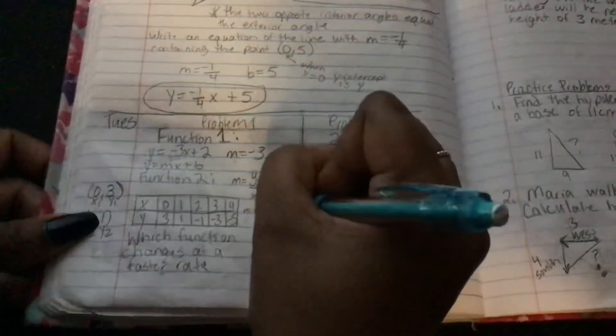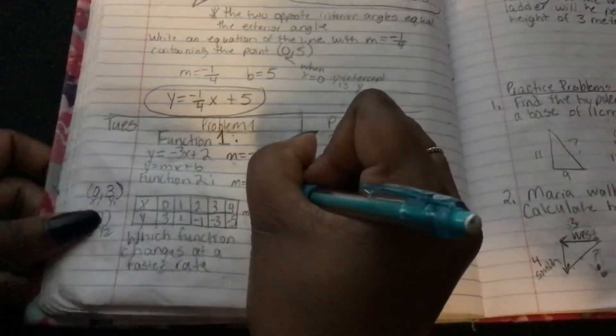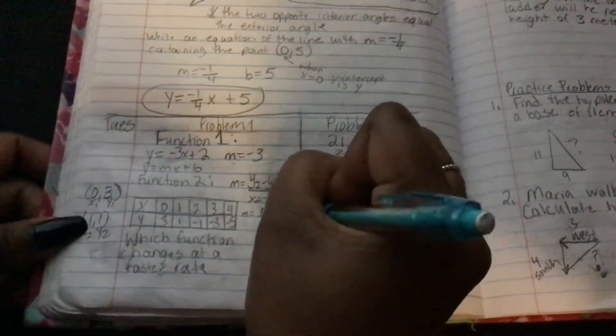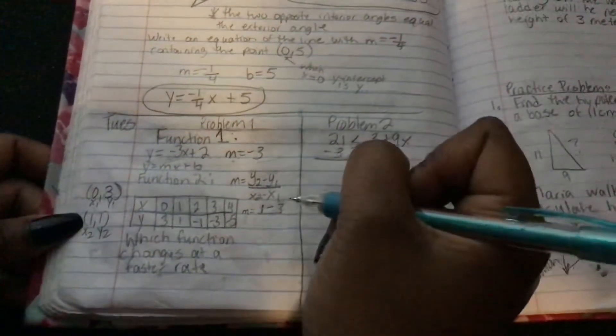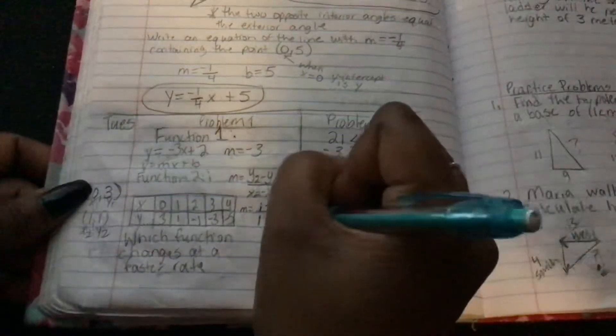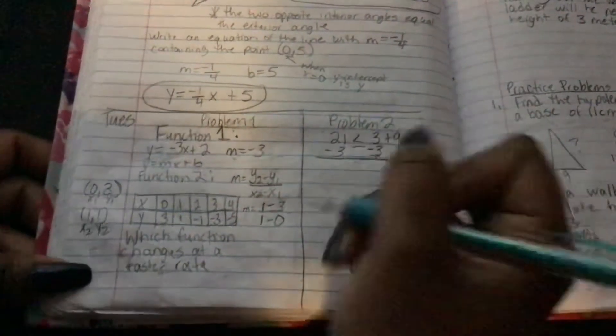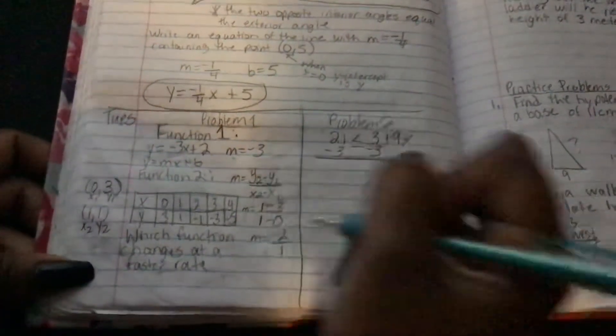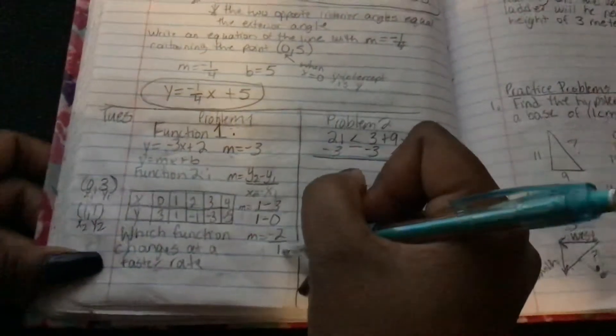So on the top, we're going to put 1 for y2 minus 3 for y1. On the bottom, we're going to put 1 for x2 and 0 for x1. So this gives us, on the top, negative 2, and on the bottom, 1. So our slope here is negative 2.